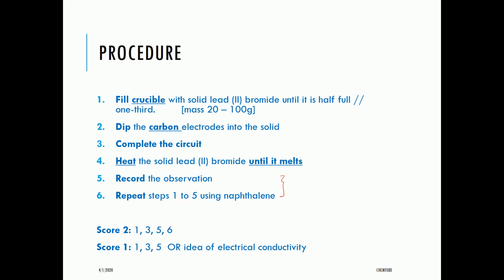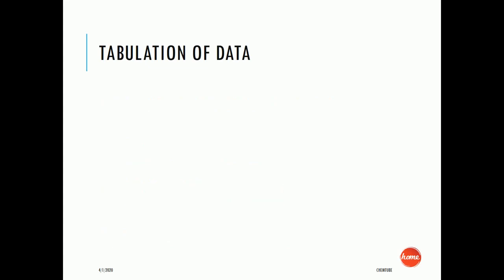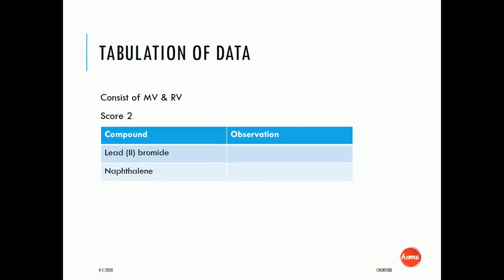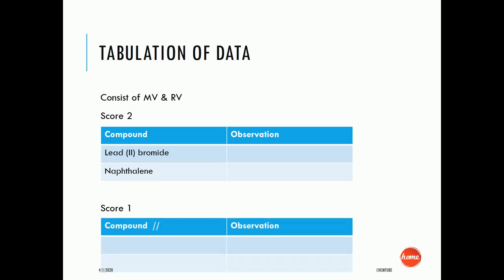For the tabulation of data, draw a table with the manipulated variable and the responding variable. The MV is the compound — lead bromide and naphthalene. The RV is the observation or electrical conductivity. Score 2 requires compound and observation with the compound names stated. Score 1 requires only compound and observation without mentioning any names. That's all for Paper 3 2019 — thank you.